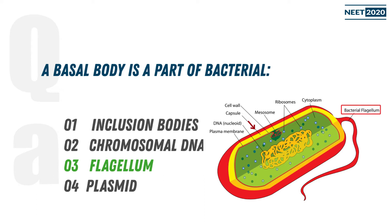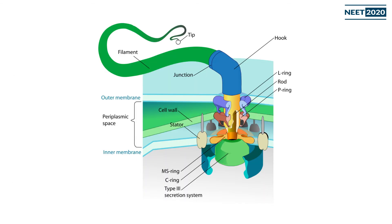You can understand that there is a helical structure. The helical structure, which we call the filament, is made of a protein called flagellin. The base of the flagellum is called a hook. The filament is very different. The hook connects the filament to the motor portion, which we call the basal body.